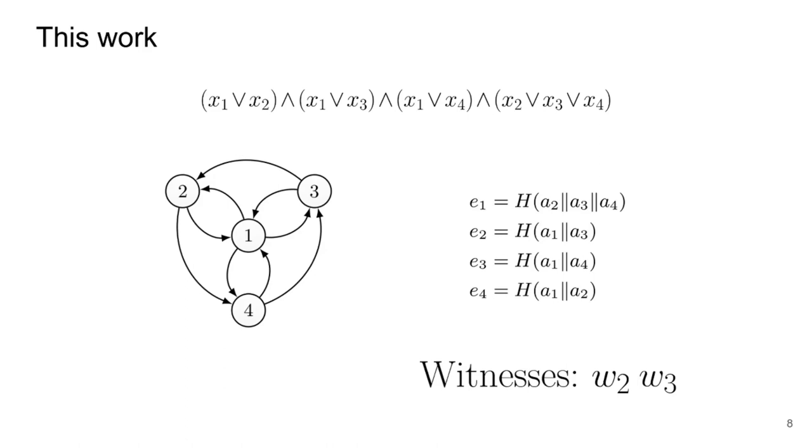If we proceed as before, removing edges of transcripts whose value a is already chosen, we will end up in this situation where note that all nodes have incoming edges. So the prover has a problem now, because without witnesses for x1 or x4, the prover cannot start transcripts 1 nor 4, because with overwhelming probability she will not be able to complete them.